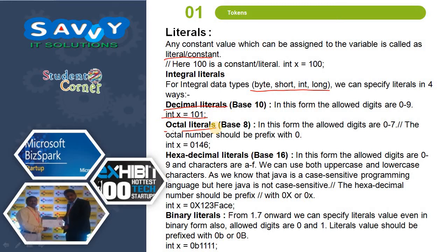Third, hexadecimal literals (base 16): the allowed digits are 0 to 9 and characters A to F. We can use both uppercase and lowercase characters. Java is case-sensitive in general, but here both cases are allowed. We prefix the value with 0x or 0X. Fourth, binary literals: we can specify literal values in binary form; the allowed digits are 0 and 1, and the value should be prefixed with 0b or 0B.